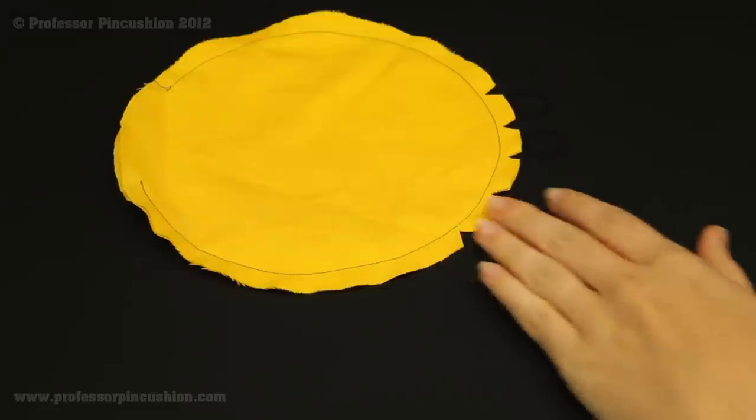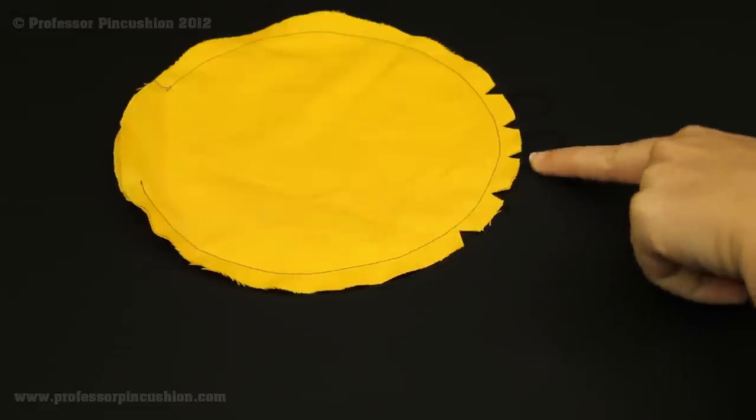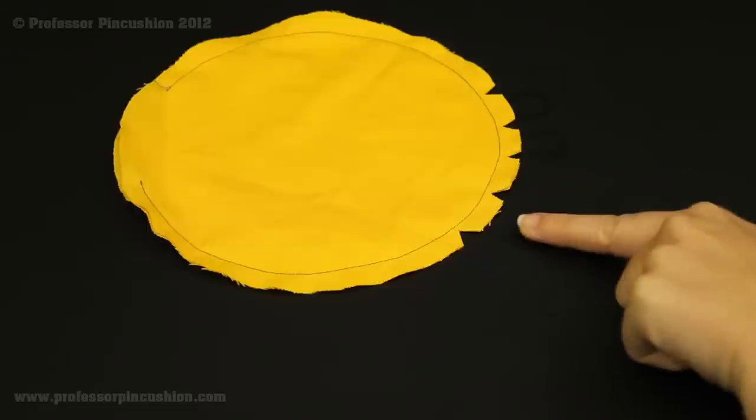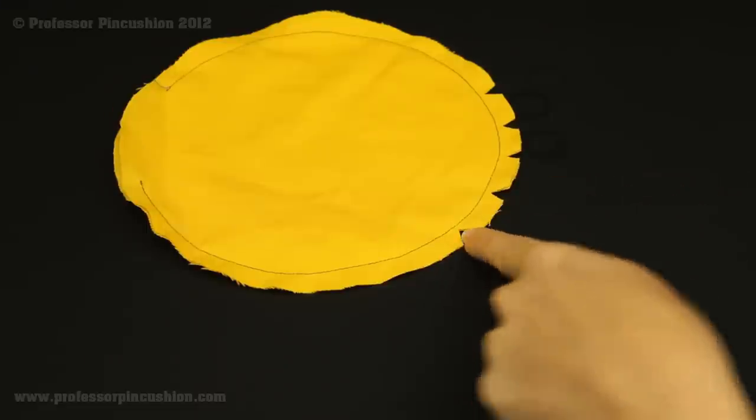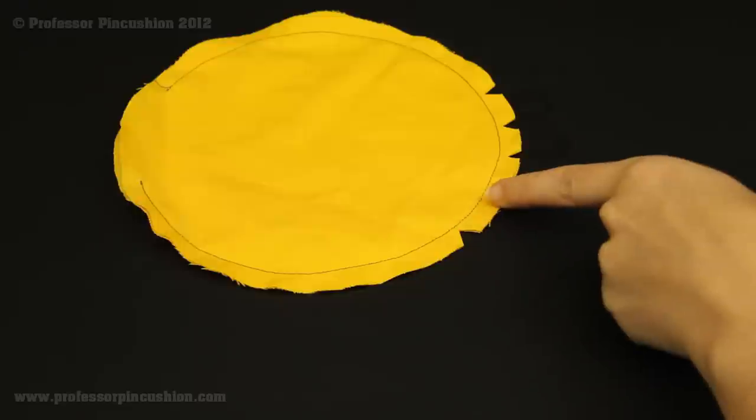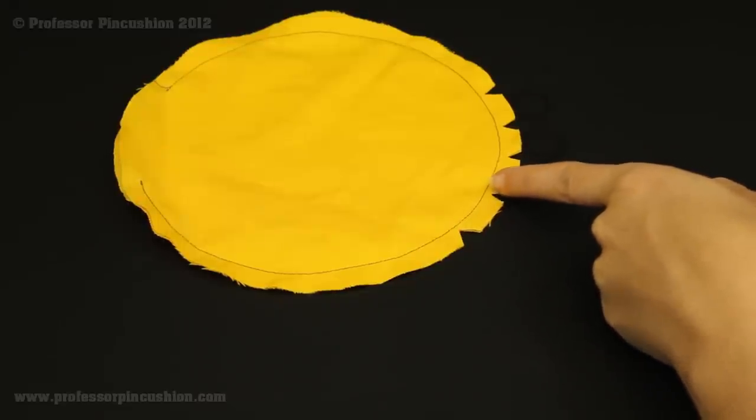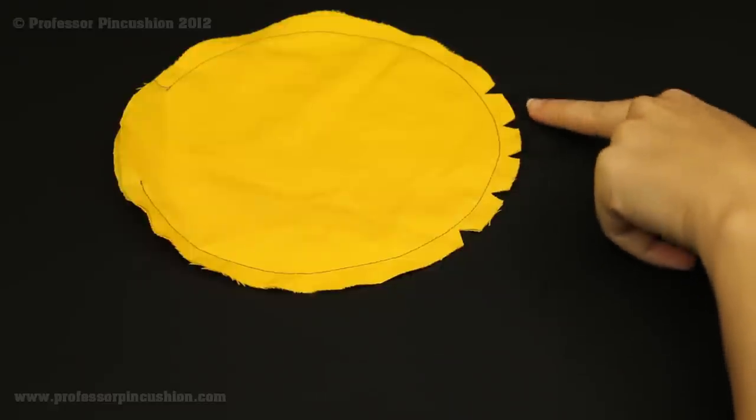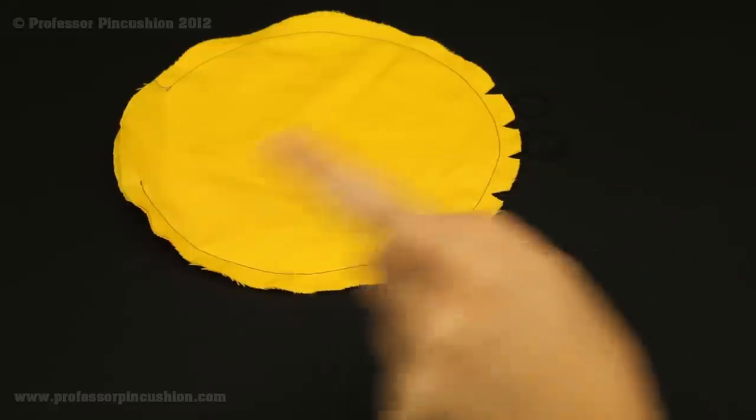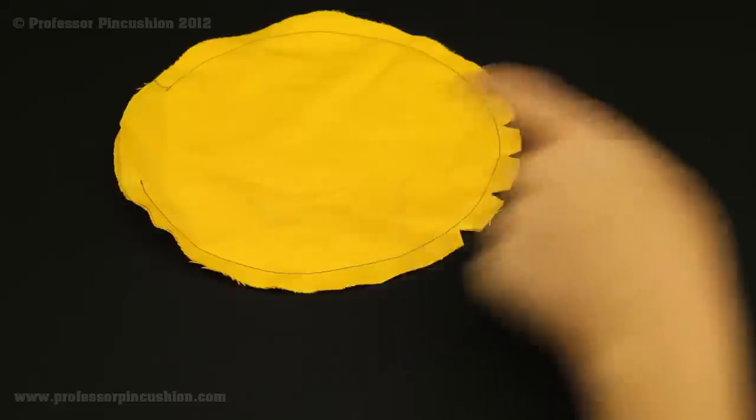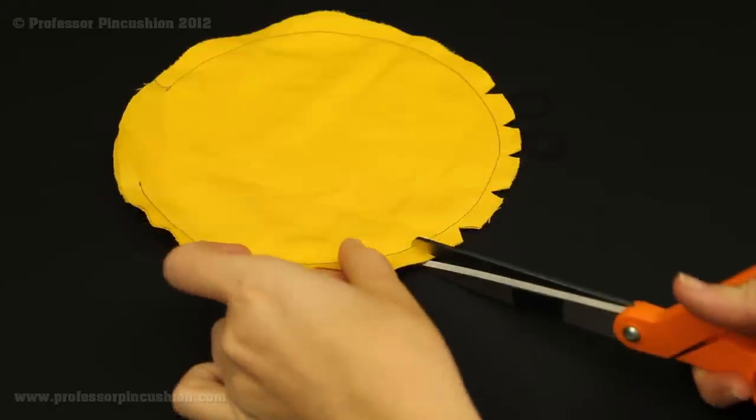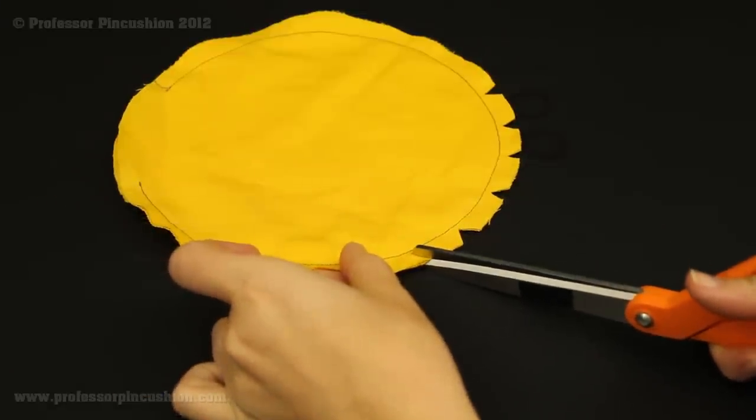And the first thing you're going to do is you're going to clip little notches into your seam allowance here. So what you're doing is cutting out a triangle and you want to get as close to your seam as possible without cutting your seam. If you cut your seam, you're essentially creating a hole in your seam here. This is what you're going to want to do whenever you have any kind of a seam that's on a curve. I'm doing it about every half inch apart here. So basically I'm just starting on one side at an angle.